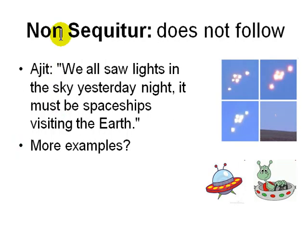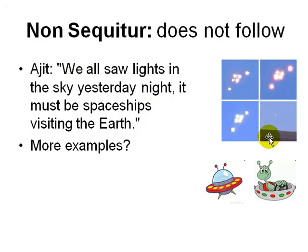Non sequitur means 'does not follow.' You can connect two unrelated facts together and, if said with a good accent, people may believe it. For example: 'We saw lights in the sky last night — it must be a spaceship visiting Earth.' The lights do not logically lead to that conclusion, but you see a lot of these kinds of arguments.